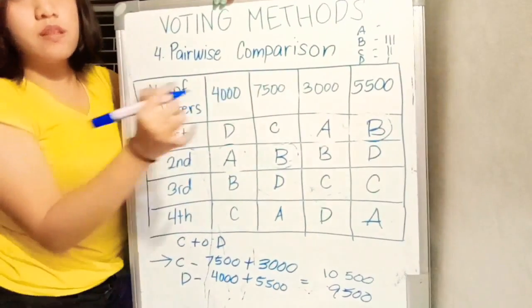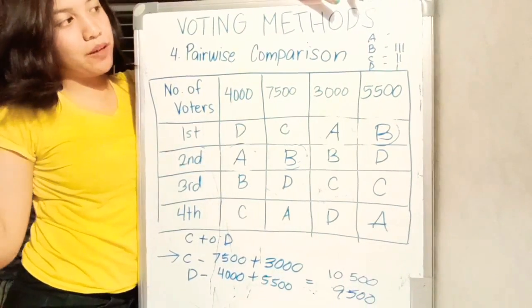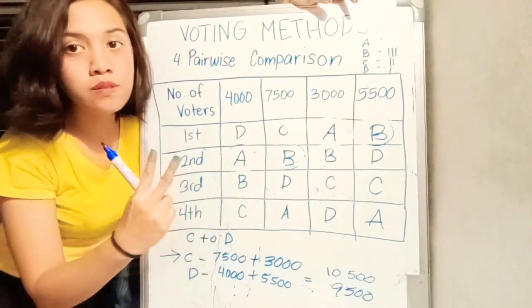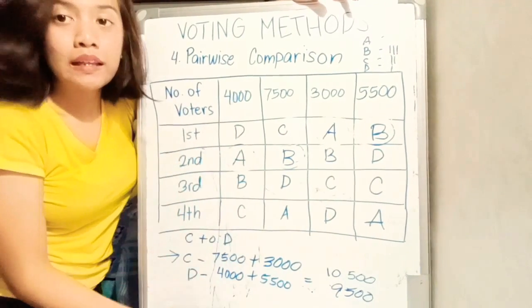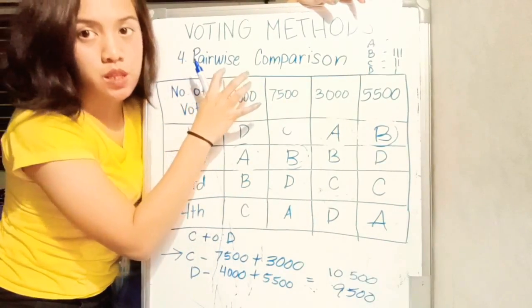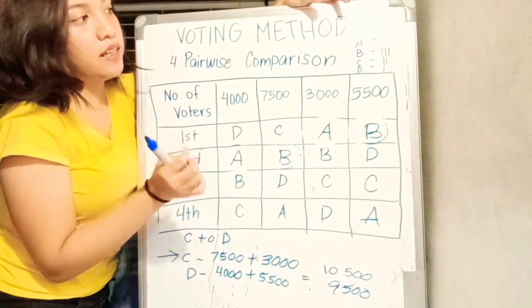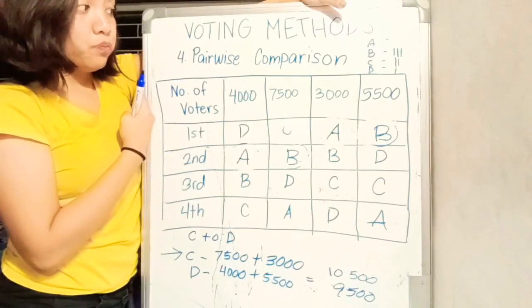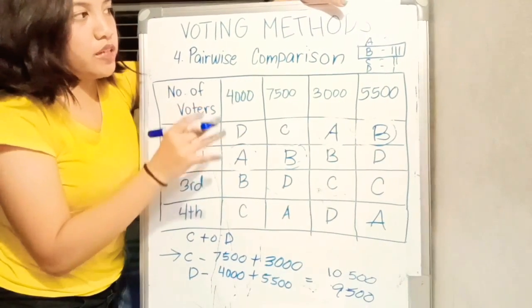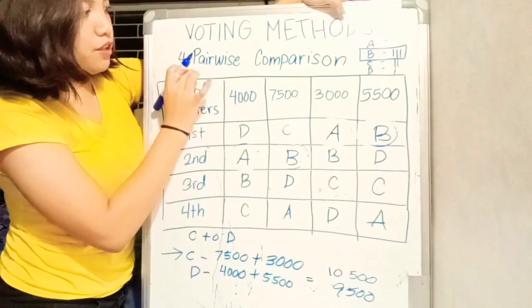If you'll notice, candidate A has no, hindi pa siya nananalo ng pairwise comparison. Candidate B already has 3 points, and candidate C has 2 points, and candidate D has only 1 point. Dahil na-compare na natin lahat ng candidates that need to be compared. Ang rule sa pairwise comparison is the candidate with the most number of points is declared as the winner. In this election, the winner is candidate B.